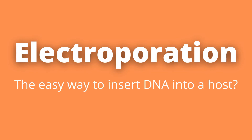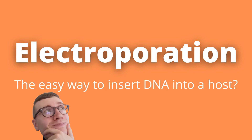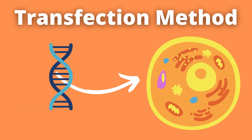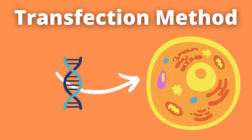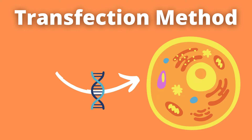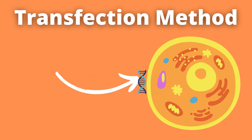Electroporation — what is it, how does it work, and why is it useful? Electroporation is a physical transfection method; in other words, it is a method to artificially introduce nucleic acid — i.e., DNA or RNA — into cells.